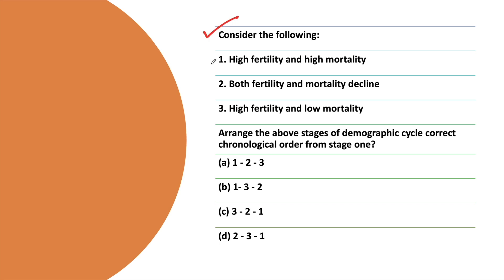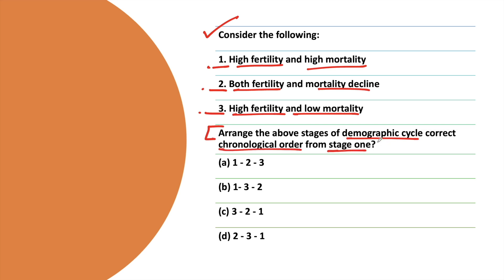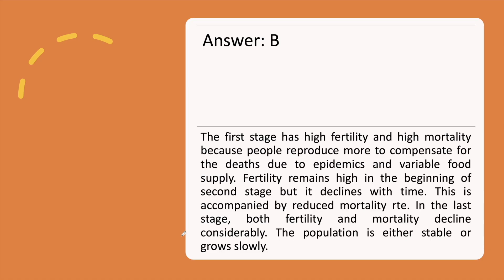The next question: Consider the following statements. Statement 1: High fertility and high mortality. Statement 2: Both fertility and mortality decline. Statement 3: High fertility and low mortality. Arrange the above statements of the demographic cycle in correct chronological order from stage 1. The correct answer is option B, with the explanation.